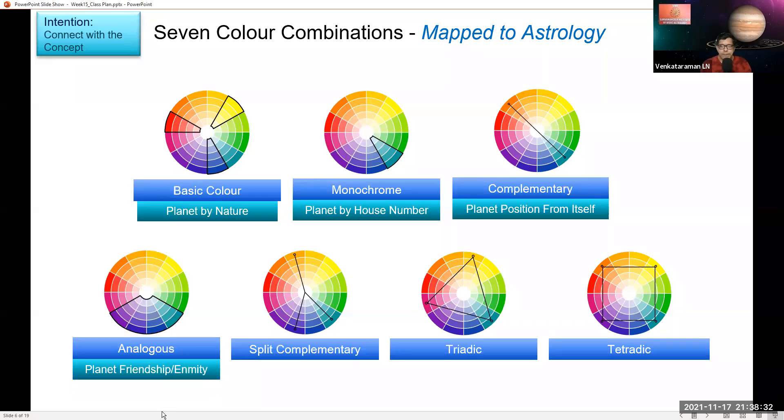Then analogous, I'm just comparing like planets based on their friendship or enmity. Split complementary, it's like different planets aspecting each other. That's the kind of combination you might have to consider.